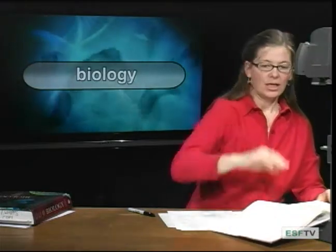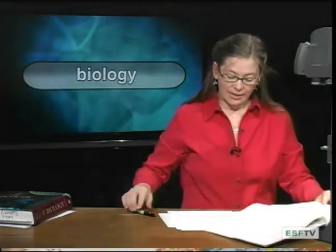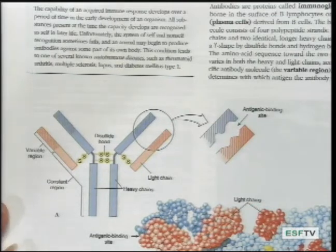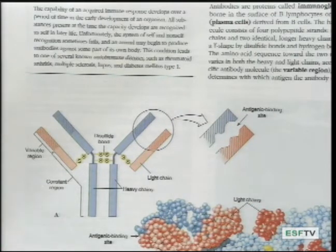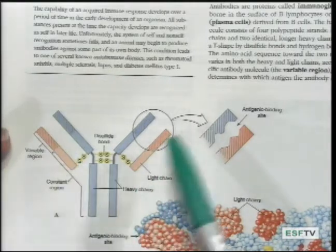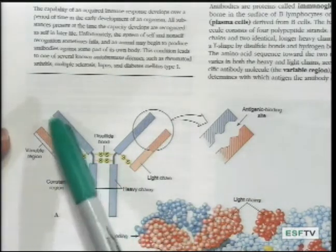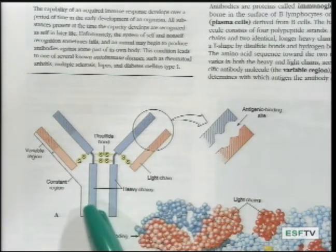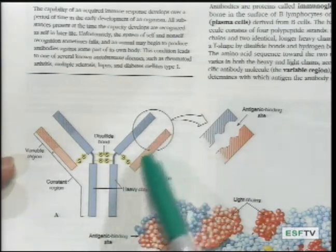So on antibodies, you have two identical light chains, or molecules that are chained together, and they form these Y shapes. So these antibodies have these Y-shaped with a heavy and a light chain.